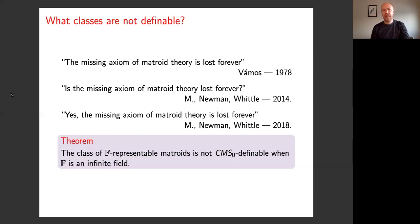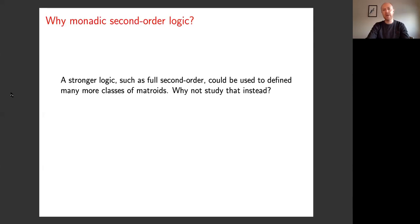So for fields we have this dichotomy: the class of F-representable matroids is CMSO definable if and only if F is a finite field. Somebody asked me a question worth addressing at length: if we like definable classes of matroids, if we think of definable classes as being better than non-definable classes, then why not just use a stronger version of logic? Why not consider full second-order logic instead — the logic that allows you to quantify over families of sets? We would end up with many more definable classes of matroids.